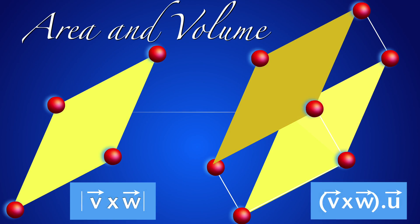We also need to know that the area of a parallelogram is the length of the cross product of the vectors spanning them, and that the volume of a parallelepiped is the triple scalar product of the vectors spanning them.